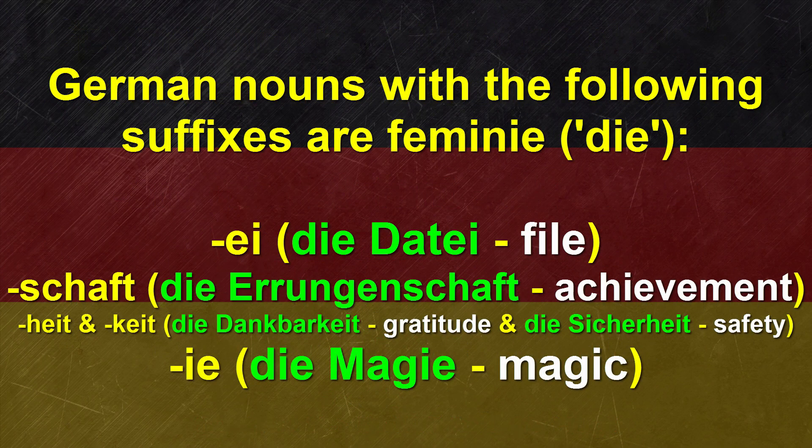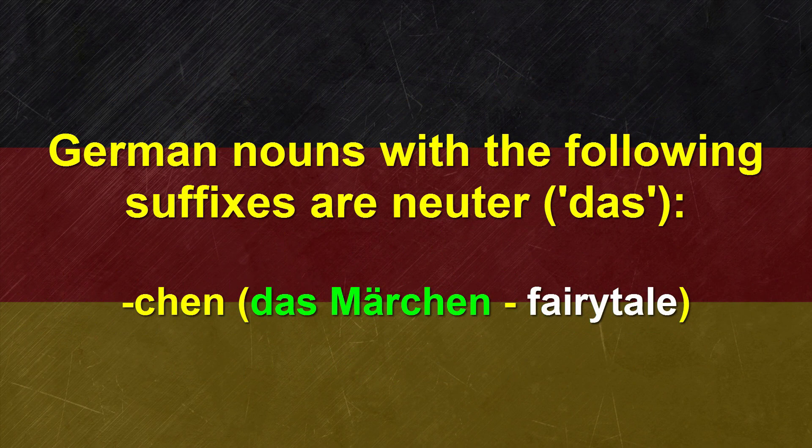Let's continue with some suffixes for feminine nouns. EI, in die Datei. SCHAFT, for instance in die Errungenschaft. HEIT and KEIT, for instance in words such as die Dankbarkeit and die Sicherheit. IE, which is spelled IE but pronounced like a long IE — die Magie. And last but not least, let's talk about a suffix for neuter nouns: CHEN, as in das Märchen.